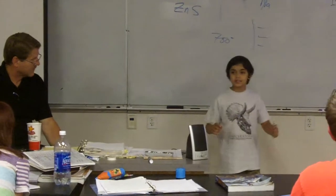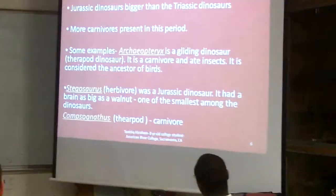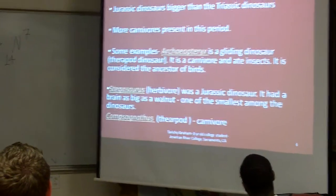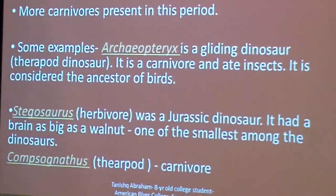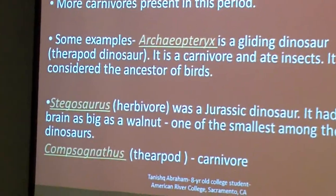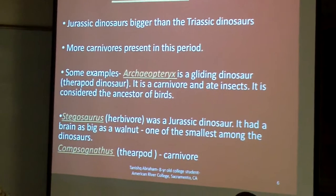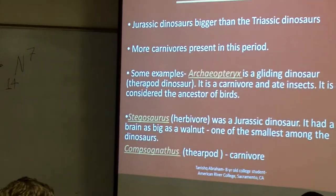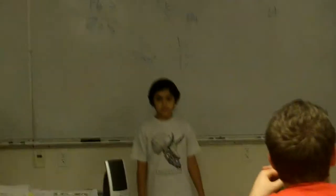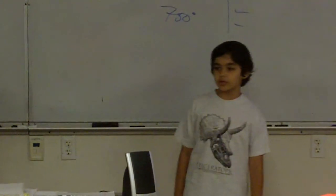This carnivore actually ate insects and small lizards. Another example is Stegosaurus, which probably many people know about. It's a herbivore and it had a small brain compared to most dinosaurs. Its brain was actually as small as a walnut. Another example is Compsognathus. Compsognathus is actually a theropod, a small dinosaur and a carnivore. Most people think Compsognathus is the smallest dinosaur, but it isn't. There's actually another dinosaur that's smaller than Compsognathus.